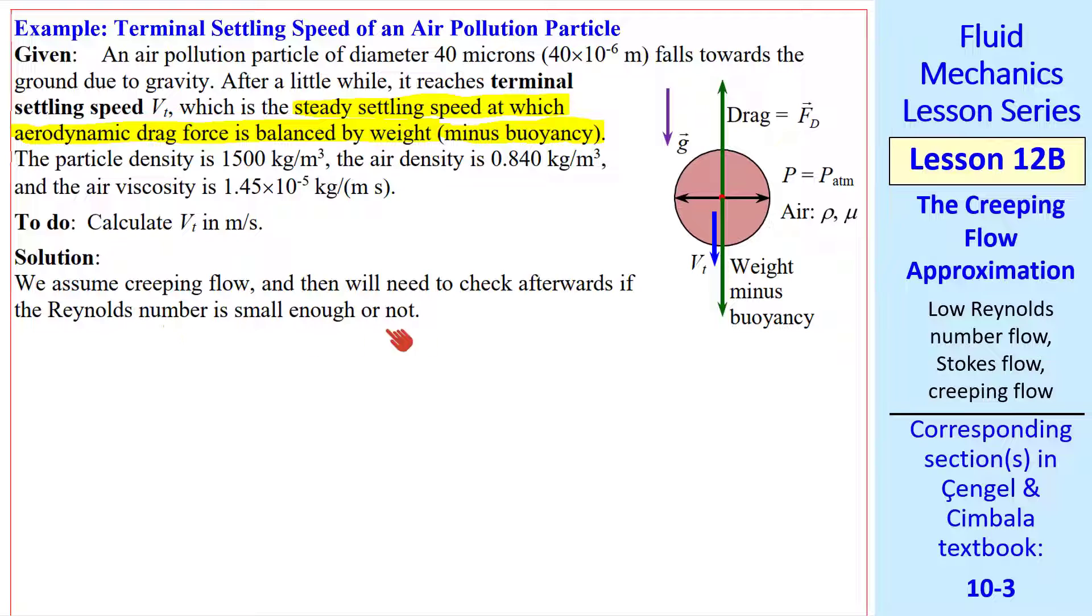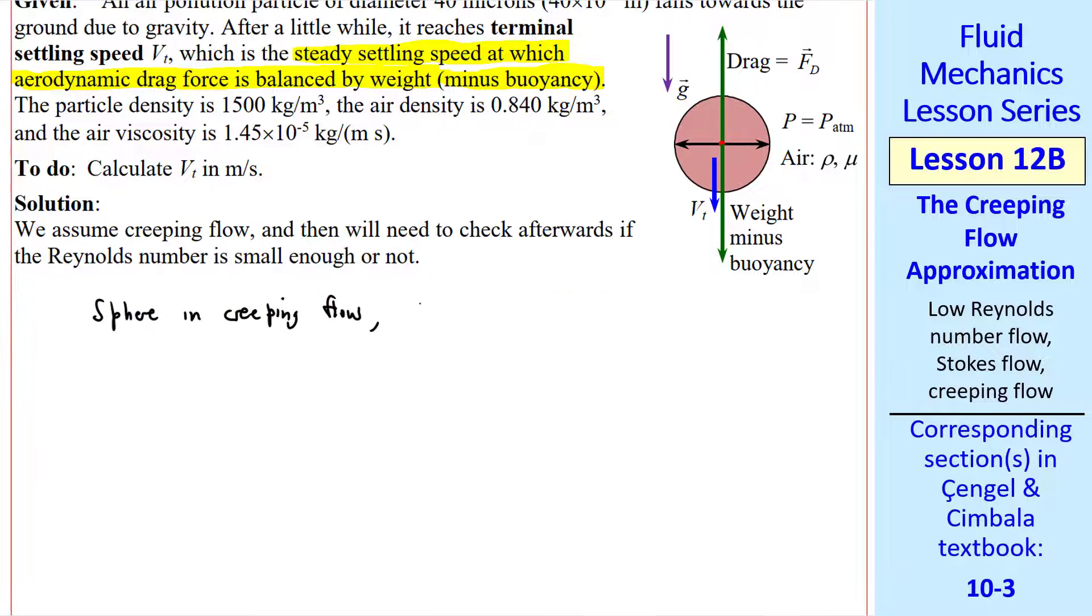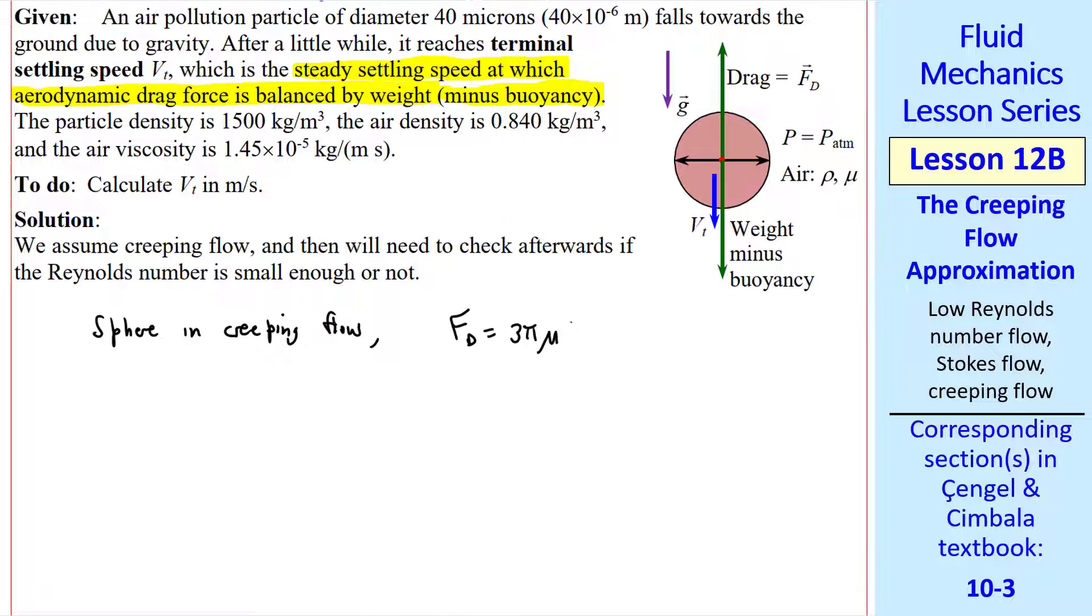To solve this, we assume creeping flow, and we'll have to check afterwards if our Reynolds number is indeed small enough. For a sphere in creeping flow, FD is 3 pi mu times VTD. The weight minus the buoyancy force is the volume of the sphere, pi D cubed over 6, times rho of the particle minus rho of the air times G.